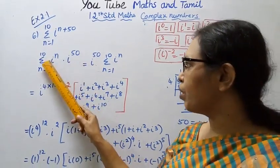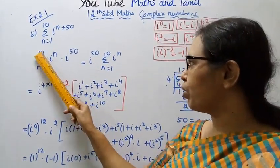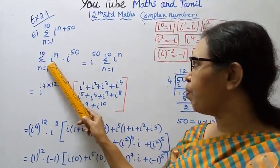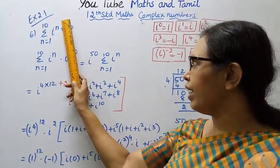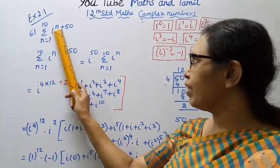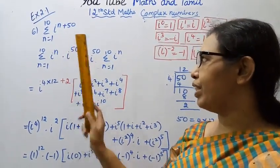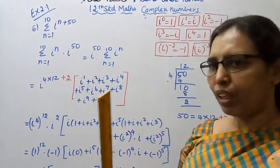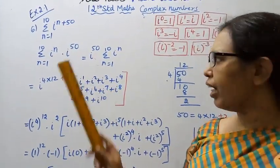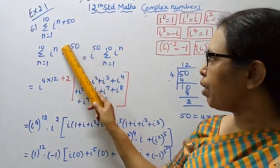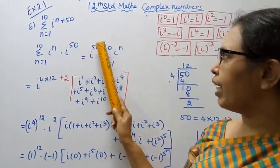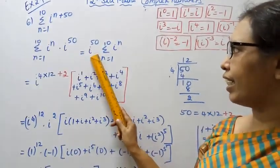I have to find sigma n equal to 1 to 10, i power n plus 1, then i power 15, then i power 50. I have to go to the front level.